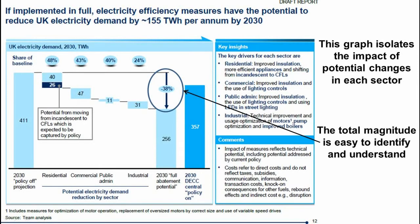Here's an example of a waterfall chart from McKinsey. This is a powerful graph because it highlights how each of these sectors can impact the path towards an ambitious demand reduction goal. We easily see here how the impact of a change to CFL policy is over twice the opportunity in public administration, and almost as large as the opportunity in the entire industrial sector.